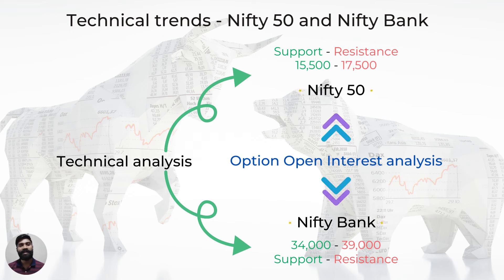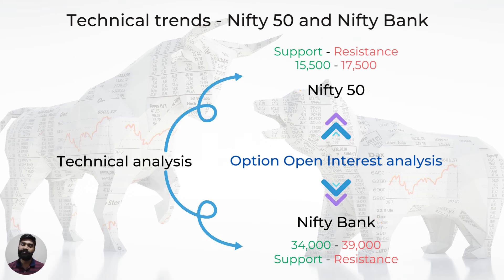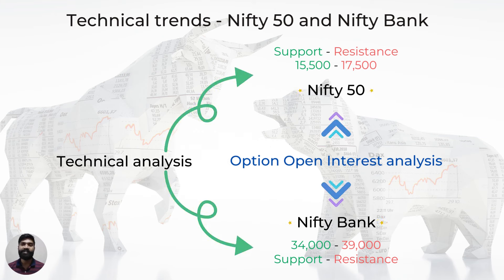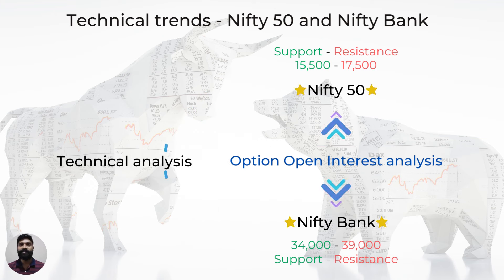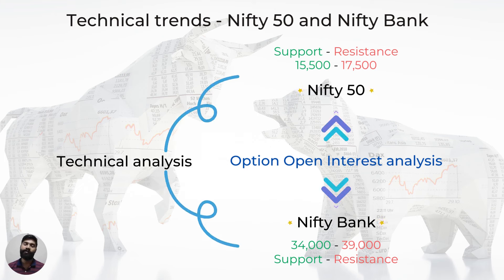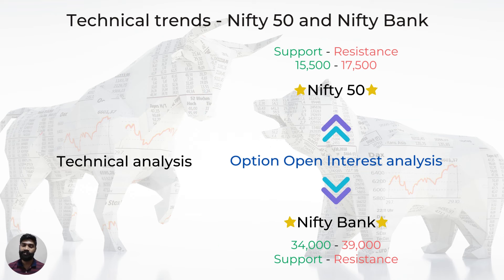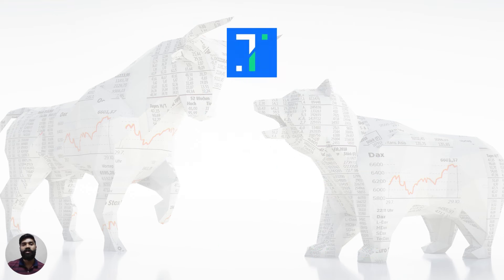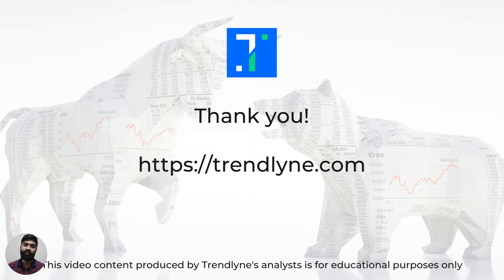To round it up, the Nifty 50 may trade in the range of 15,500 to 17,500 for the next month's option expiry. Given that the heavyweight stocks and FII data aren't showing the same bullishness that Nifty 50's August 25 monthly expiry OI is showing, markets may continue to be volatile. With regard to Bank Nifty, it may trade in the range of 34,000 to 39,000, provided there are no big swings in its stock constituents. You can find the futures and options data and more on trendlyne.com for any stock or index of your choice. This is Tejas signing off.